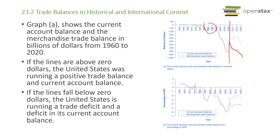The current account balance has recovered somewhat because of the other two components — particularly foreign income. US companies invest a lot of money in other countries, and we receive a lot of payment from those investments. Panel B shows the current account balance and merchandise trade balance as a percentage of GDP. Both are negative and significant: the merchandise trade deficit is almost 5% of GDP, and the current account is close to 3%.